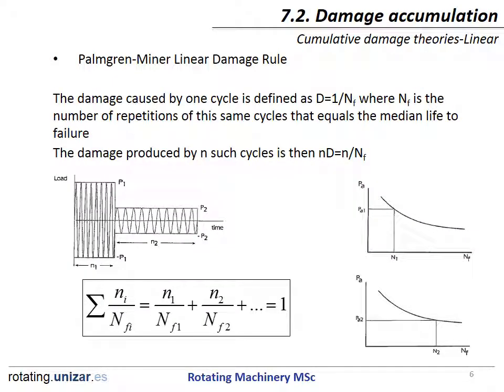The Palmgren-Miner linear damage rule is the most widely used approach to predict fatigue life. The damage caused by one cycle is defined as D equal to 1 divided by NF, where NF is the number of repetitions of that same cycle that equals the median life to failure. The damage produced by N such cycles is then N divided by NF.